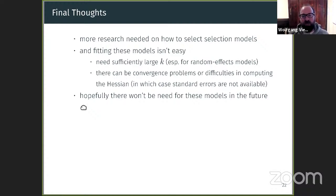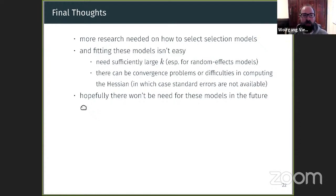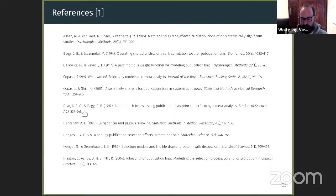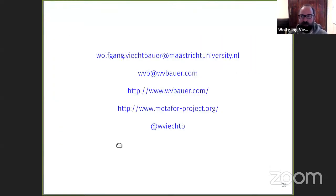I want to finish with one final point: hopefully in the future, we won't need these models. For example, if we conducted a meta-analysis based only on pre-registered studies, we would be minimizing or eliminating publication bias — that is really the best way to deal with it. But in the meantime, maybe we can use some of these selection models to try to address potential publication bias.